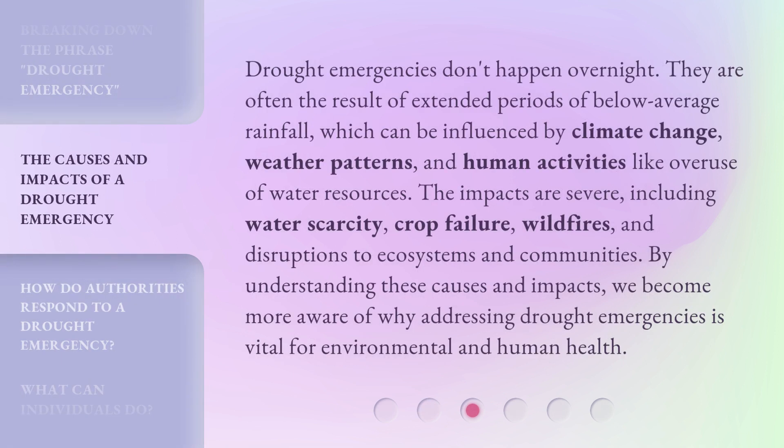Drought emergencies don't happen overnight. They are often the result of extended periods of below-average rainfall, which can be influenced by climate change, weather patterns, and human activities like overuse of water resources. The impacts are severe, including water scarcity, crop failure, wildfires, and disruptions to ecosystems and communities. By understanding these causes and impacts, we become more aware of why addressing drought emergencies is vital for environmental and human health.